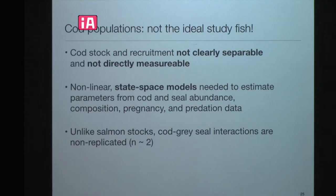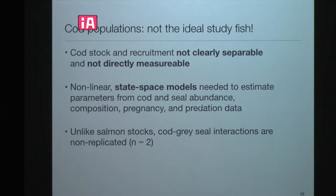Cod is not a good fish to study if you're just getting started in fisheries. You can't really separate stock and recruitment, and neither is directly measurable. You need fairly complicated state-space models to estimate parameters — probably 30 to 40 parameters in these models that have to be estimated from abundance composition, pregnancy rates, predation rates, and so on. Unlike salmon, gray seal-cod interactions are not replicated; we basically have two cod stocks we could look at.